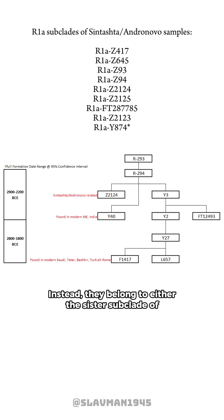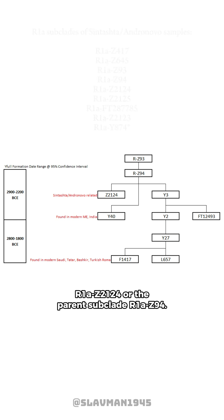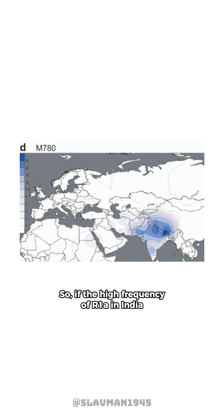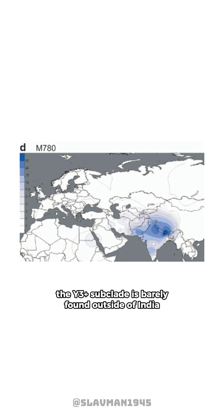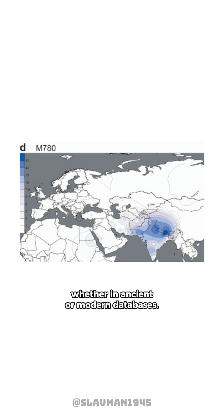Instead, steppe samples belong to either the sister subclade R1A Z2124 or the parent subclade R1A Z94. So if the high frequency of R1A in India came from Sintashta or Andronovo migrations, why is the dominant Indian subclade missing in those steppe samples? The Y3 plus subclade is barely found outside of India in any significant numbers, whether in ancient or modern databases.